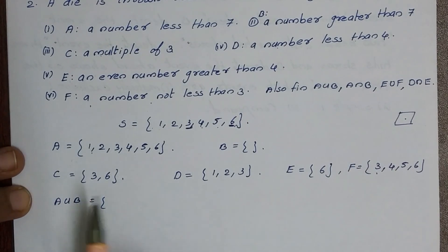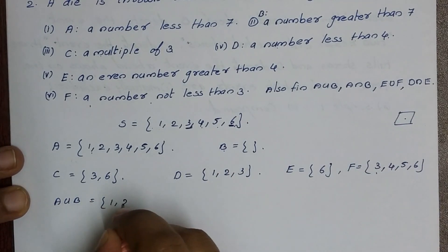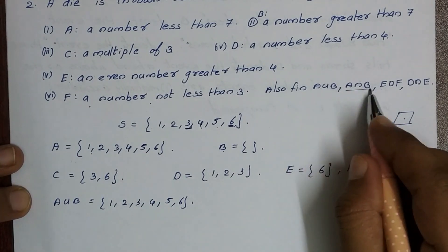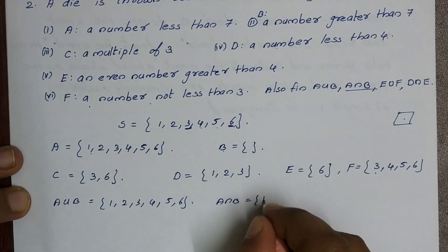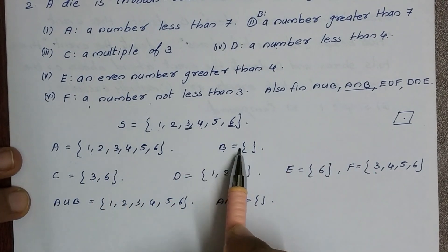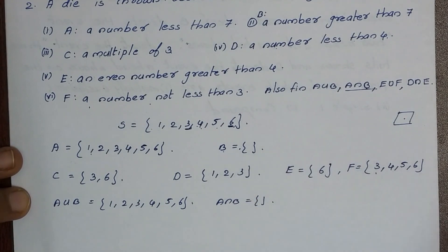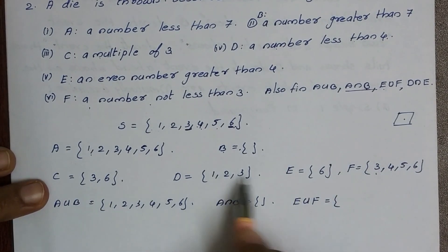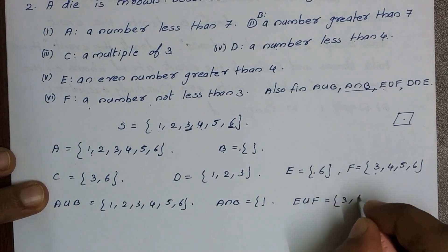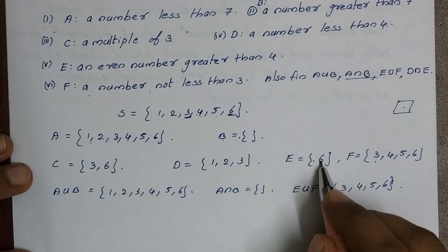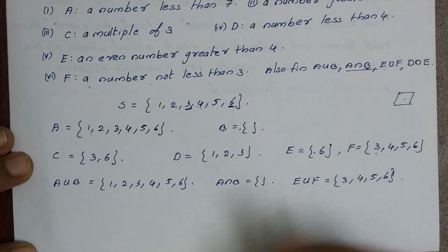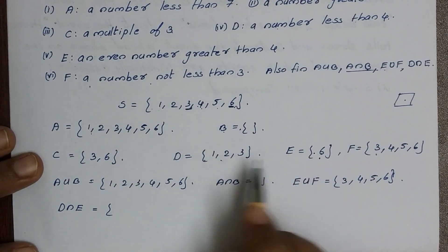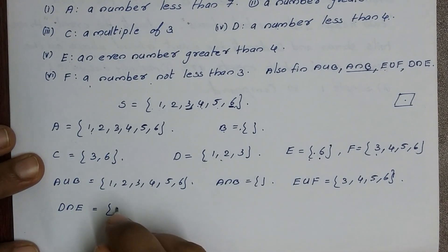Now we compute: A union B equals {1, 2, 3, 4, 5, 6}. A intersection B is the null set, since B is the null set. E union F — combining E and F, all elements — gives {3, 4, 5, 6}. D intersection E: D = {1,2,3} and E = {5,6} have no common elements, so D intersection E is the null set.